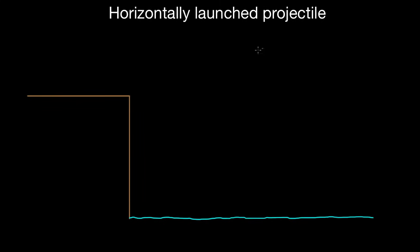What we mean by a horizontally launched projectile is any object that gets launched with a completely horizontal velocity to start with. So if something is launched off of a cliff in a straight horizontal direction with no vertical component to start with, then it's a horizontally launched projectile. A boring example is just a ball rolling off of a table — the velocity of the ball initially would just be horizontal. So if the initial velocity of the object for a projectile is completely horizontal, then that object is a horizontally launched projectile.